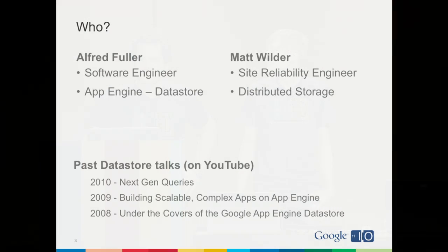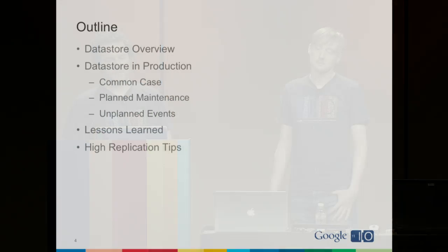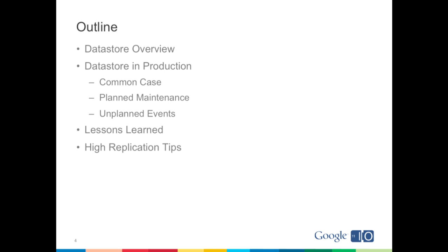I can assume that you're all interested in the Datastore in general. If that's true, you should check out past I/O talks, specifically the ones listed here, to get a better understanding of how the Datastore works as a whole. Today we're going to give a brief overview of the Datastore, highlighting common infrastructure components, talk about the Datastore in production covering common cases, planned maintenance, and unplanned events, then discuss lessons learned from running the Datastore for over three years, and give tips on how to better acclimate to the High Replication Datastore.